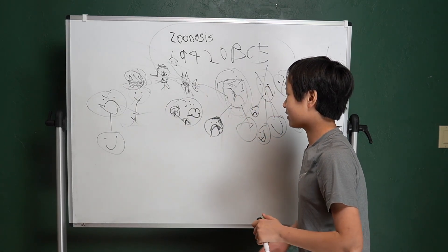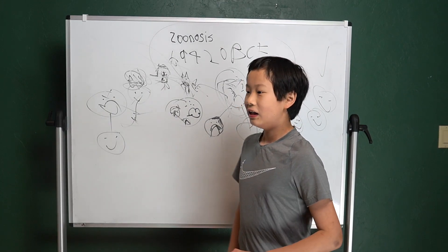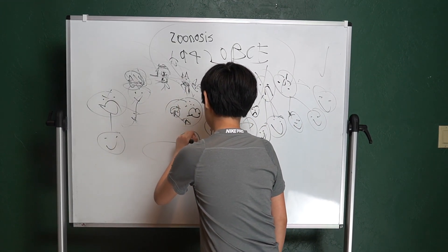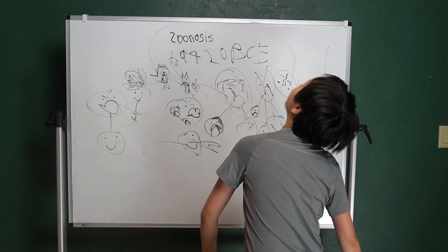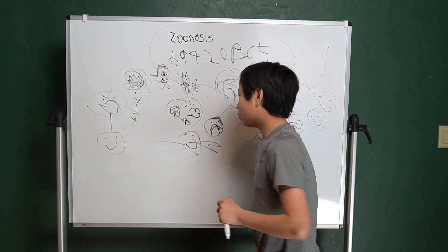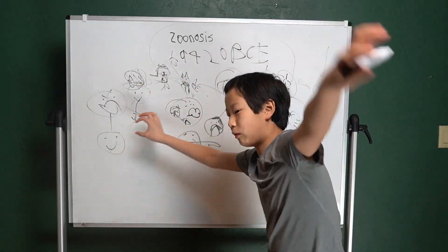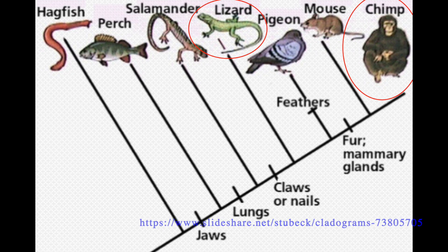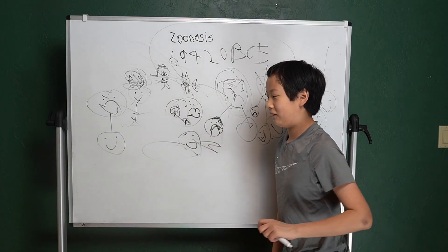but say if you were a reptile, if you're a lizard, maybe you need like 15, no not 15, a lot more mutations to infect a human cause like this is a human this is a reptile, they're so far apart so you gotta connect. So that's why all these viruses are like going from this to this